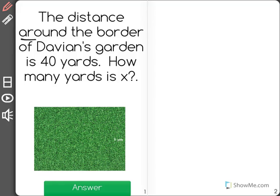The distance around the border of Davian's garden is 40 yards. How many yards is x?